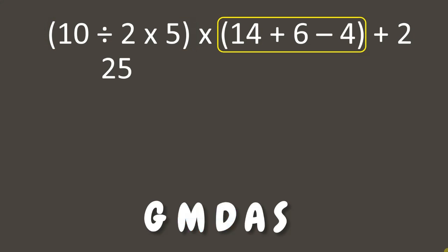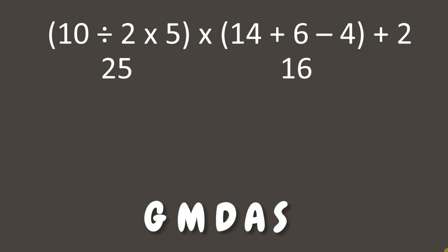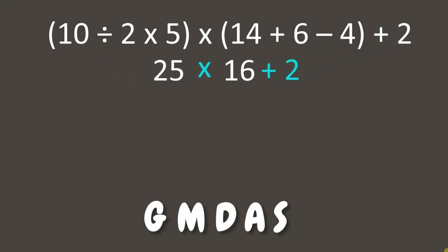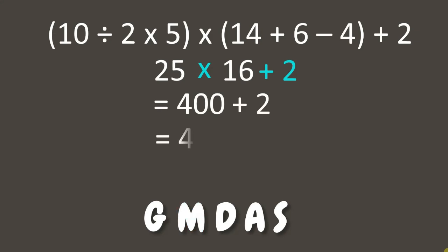Next, let's solve inside the other grouping symbol. We have two operations: addition and subtraction. Since addition comes first, we add 14 and 6, which gives us 20, then subtract 4 from 20, resulting in 16. Now let's combine the remaining operations. We have multiplication and addition — according to the rule we multiply first: 25 times 16 equals 400.